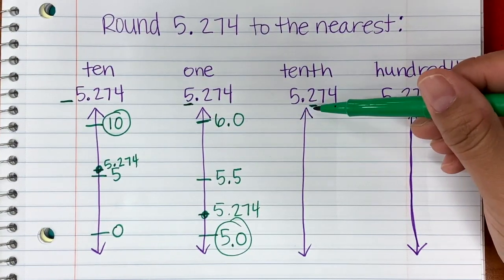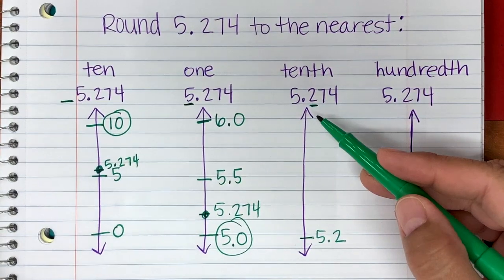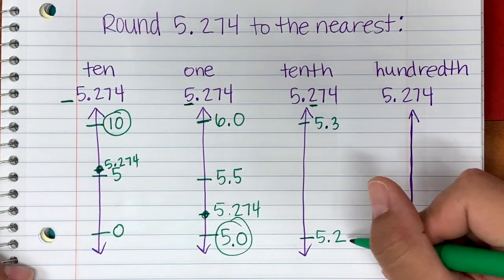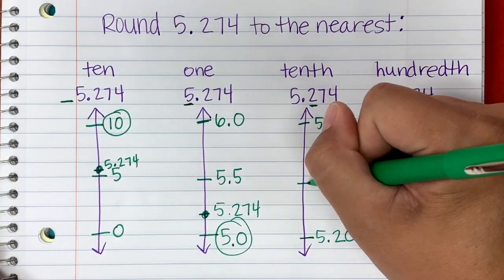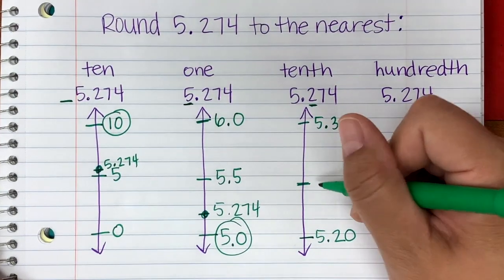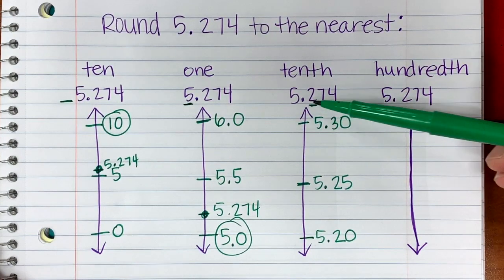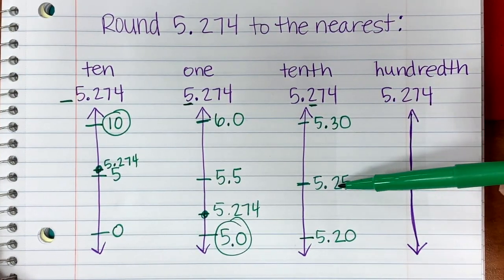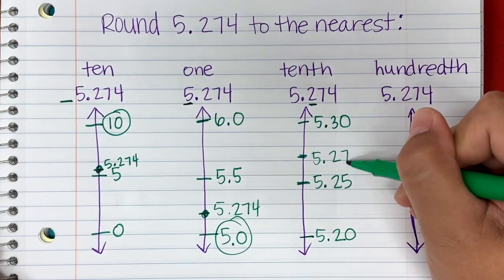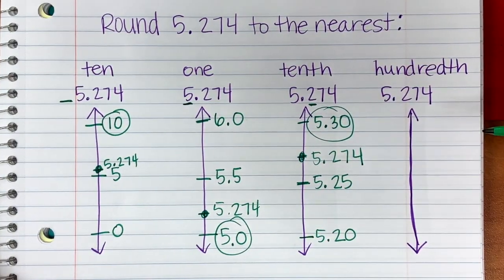The digit in the tenths place is 2, so the floor is 5.2 and everything after is a zero. Increasing the tenths place by one gives us a ceiling of 5.3. To find the midpoint, we can add a zero: 5.20 and 5.30 look like 20 and 30, so 25 falls in between — the midpoint is 5.25. We plot 5.274, which falls above 5.25, so we round up. 5.274 rounded to the nearest tenth is 5.3.